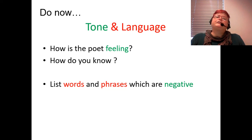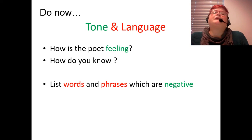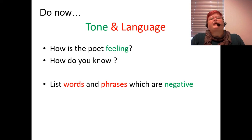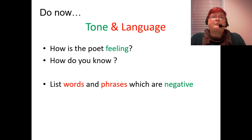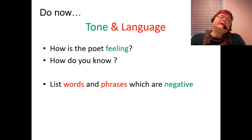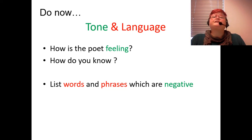Hi Year 8, welcome back to your third lesson looking at 'Presents from my Aunt in Pakistan.' You're doing our tasks on the board, so it's to do with the tone of the poem. How do you think the speaker feels in this poem? How is she feeling and how do you know that? See if you can make a list of words and phrases which are negative. Pause the video and do that now.